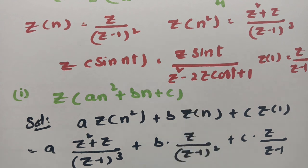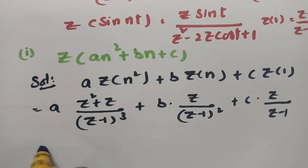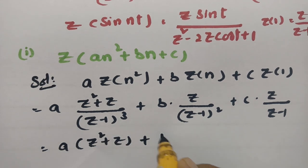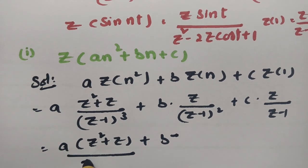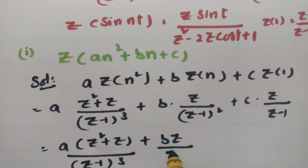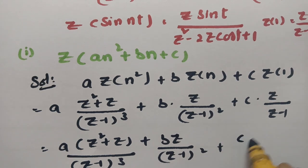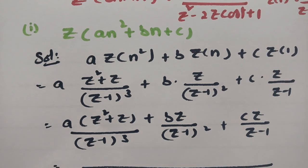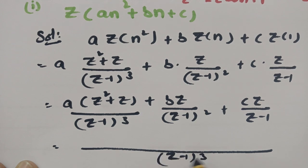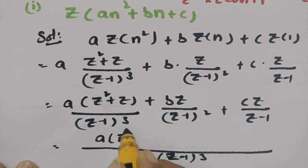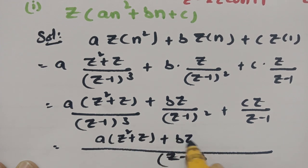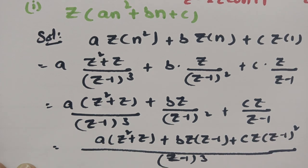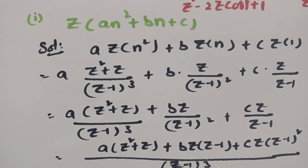Substituting all formulas, we get a·(Z² + Z)/(Z−1)³ + bZ/(Z−1)² + cZ/(Z−1). Taking (Z−1)³ as the LCM, this becomes: [a(Z² + Z) + bZ(Z−1) + cZ(Z−1)²] / (Z−1)³. This is the solution for the first problem according to the linearity property.